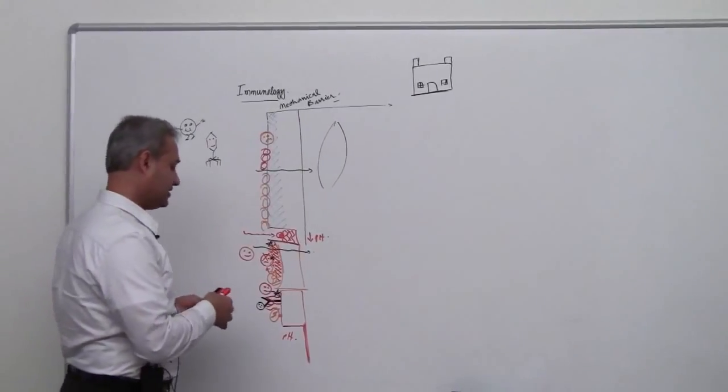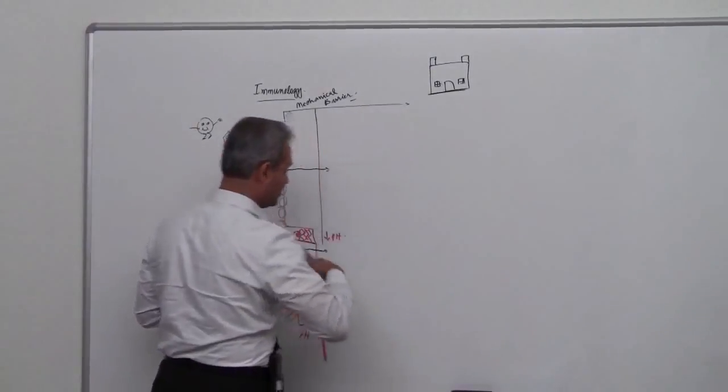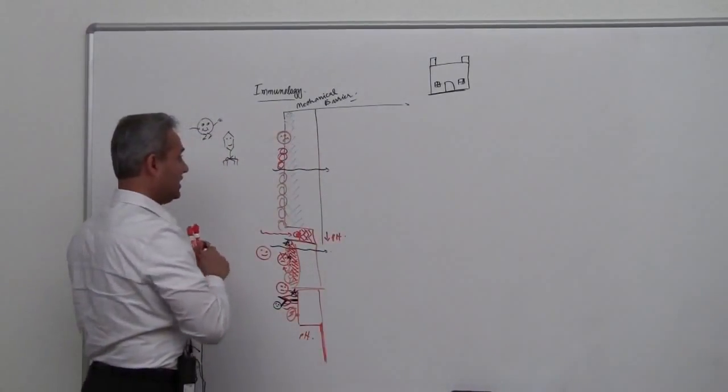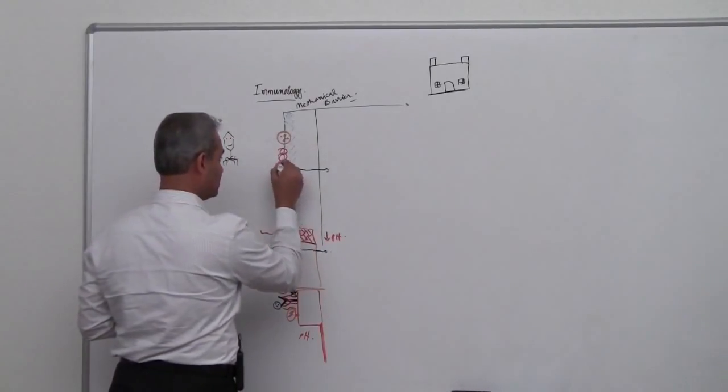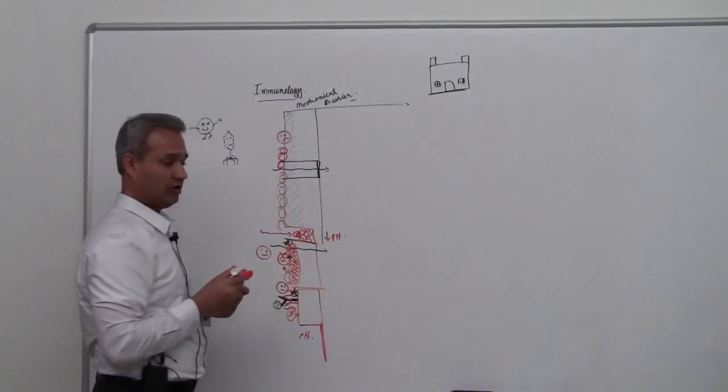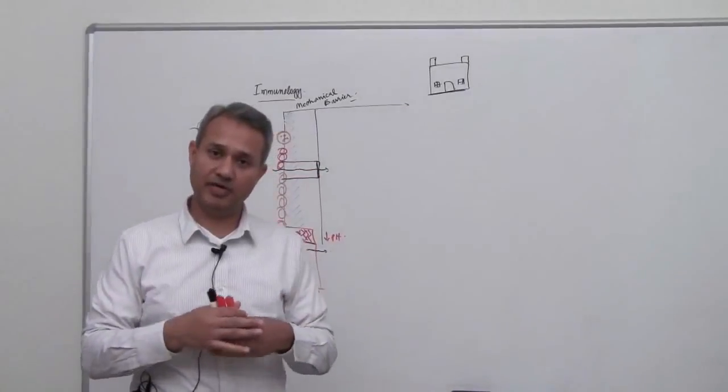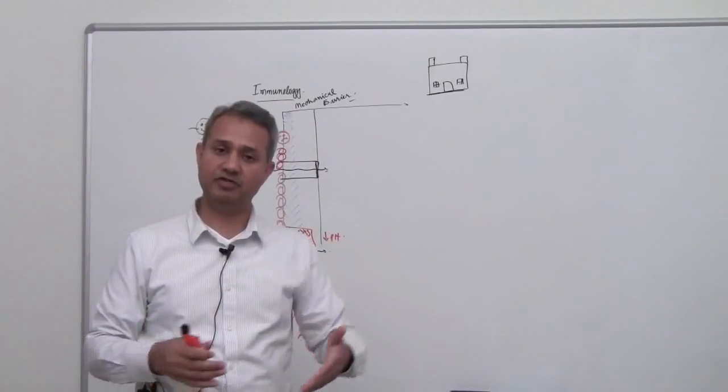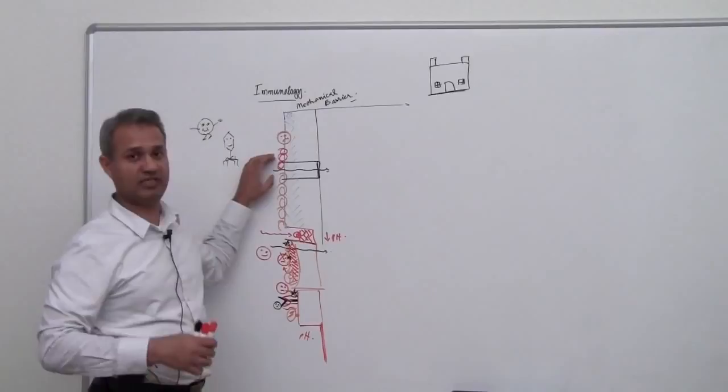Then let us say somehow the virus or the bacteria, whoever, he had better drills, he had better strength, he was stronger, our mechanical barriers could not offer him resistance, or there was an injury to the mechanical barrier. And that is why many times when we have injuries, we start developing infections. So the barrier was breached for some reason.